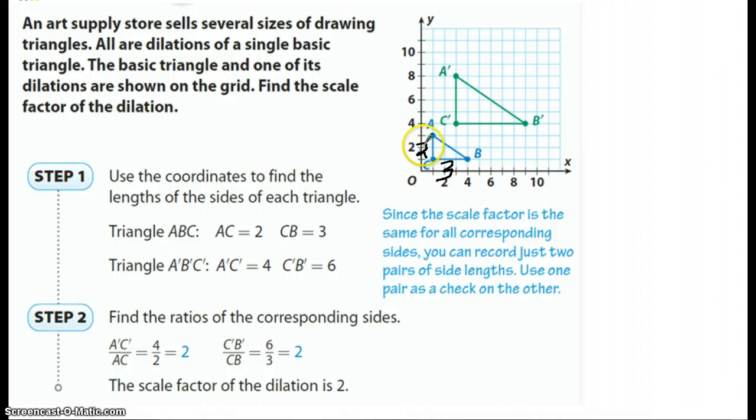So what about his corresponding, the corresponding angles, which is A prime, C prime. If I counted those, I will get one, two, three, four. So I'm going to put four here. And if I were to count C prime, B prime, I would get one, two, three, four, five, six. So I'm going to put that there.